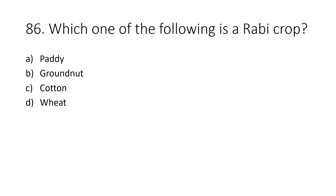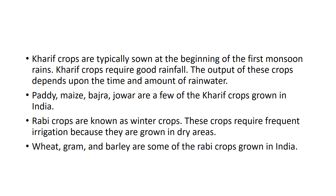Question number 86: Which one of the following is a Rabi crop? Option A: Paddy, Option B: Groundnut, Option C: Cotton, Option D: Wheat. Answer: Option D, Wheat. We have two types of crops: Rabi crops and Kharif crops. Kharif crops are typically sown at the beginning of the monsoon rains and require good rainfall — paddy, maize, bajra, and jowar are Kharif crops. Rabi crops are known as winter crops requiring frequent irrigation — wheat, gram, and barley are Rabi crops grown in India.